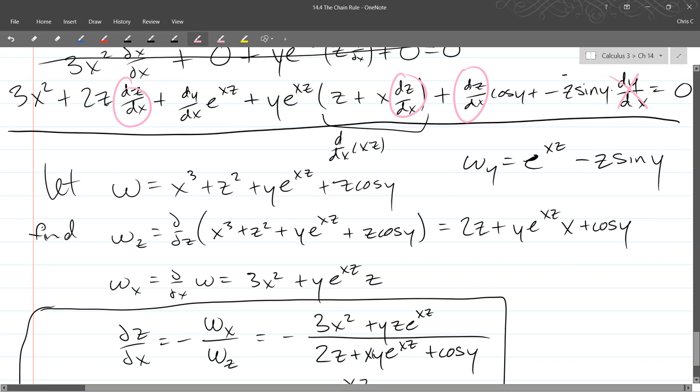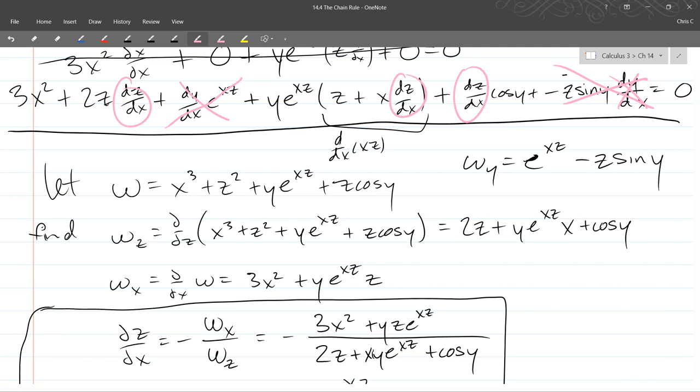So that's going to be zero, which will cancel that entire term right there. The other one is this dy dx, going to be zero, canceling out that entire term. So I'm going to rewrite the slightly smaller version next to it. And then we're going to algebraically solve for dz dx, and see what we've got.